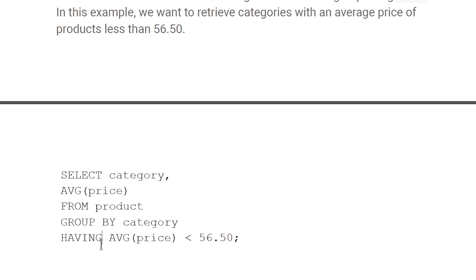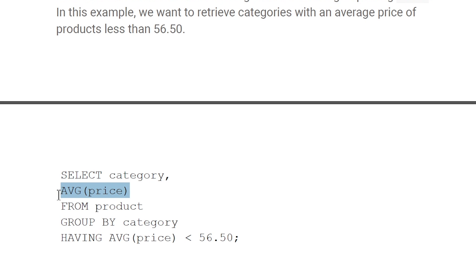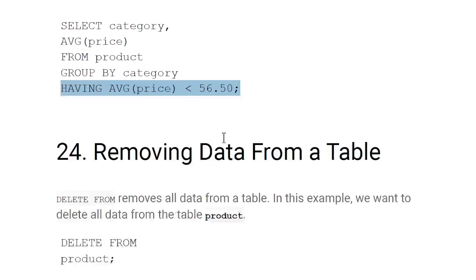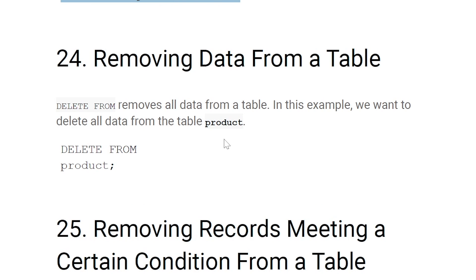Filtering rows using aggregate functions: use HAVING along with GROUP BY. For example, SELECT category, AVG(price) FROM product GROUP BY category HAVING AVG(price) < 55.50 — this groups entries by category, calculates the average price per group, and filters to only show groups where the average price is less than 55.50.